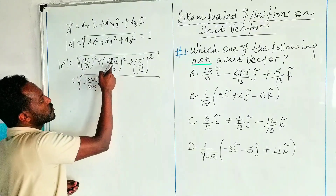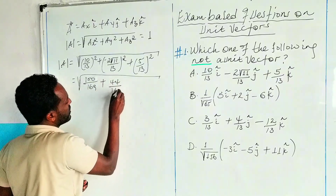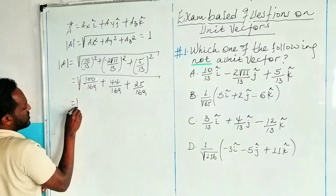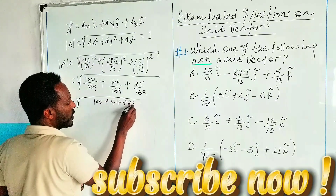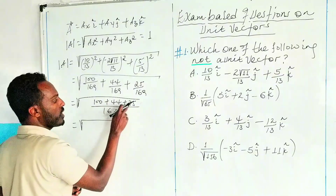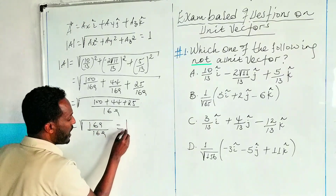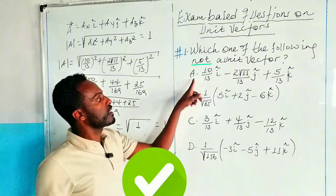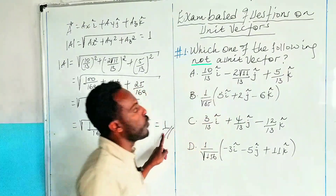Continuing: (-2√11)² = 4×11 = 44, so 44/169, plus 5² = 25, so 25/169. Since 169 is common to all terms: square root of (100 + 44 + 25) / 169 = square root of 169/169 = square root of 1 = 1. So the magnitude of vector A equals 1, which means vector A is a unit vector.